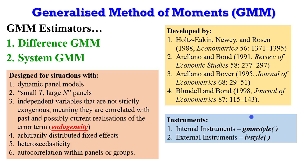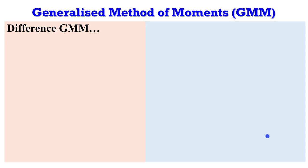In discussing GMM, we talk about instruments, moment conditions, and identifying restrictions. In GMM there are two categories of instruments: internal instruments and external instruments. Using the xtabond2 command in Stata, variables listed within the brackets of the GMM-style instruments are referred to as internal instruments, while variables listed within the brackets of the IV-style are referred to as external instruments.